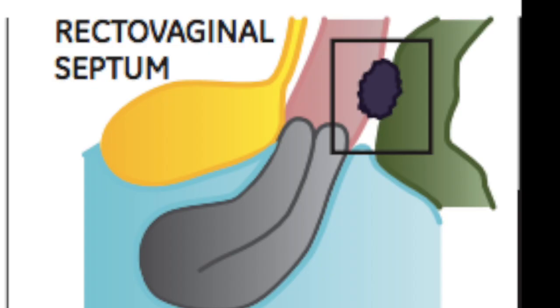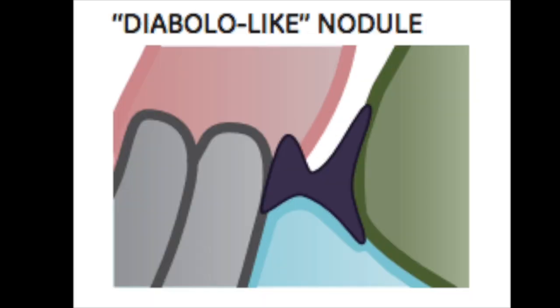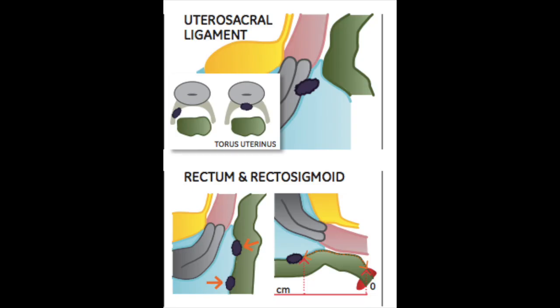The posterior compartment will include the rectovaginal septum and nodules that involve the posterior vaginal fornix, the edge of the cervix, and the rectum — as was seen in our case — and eventually also the uterosacral ligament posteriorly, as well as the rectum and the rectosigmoid.